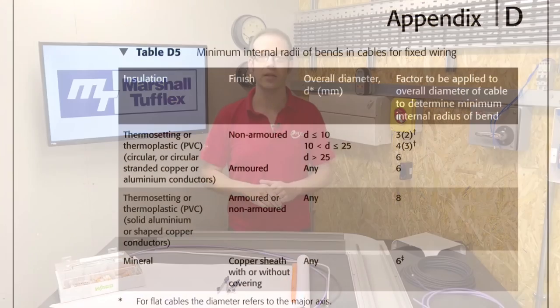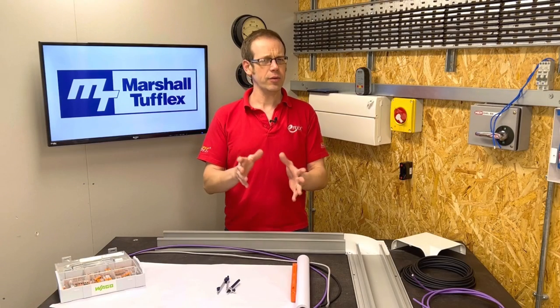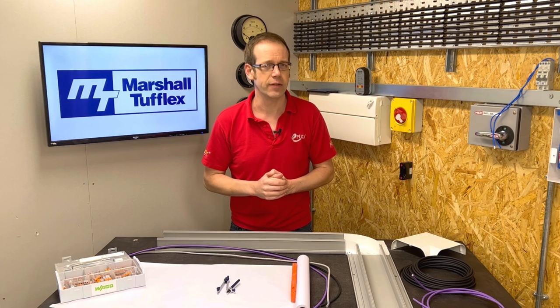Information on the bending radii of cables can be found in the on-site guide in table D5 for mains cables with variations for armoured, non-armoured, and mineral insulated cables along with others. However, it's noticeably silent on matters of data cables and what the bending radius is for these.